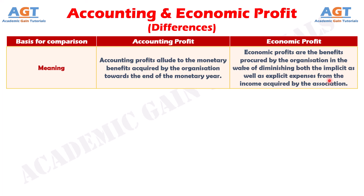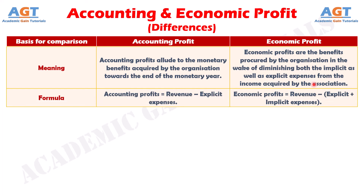Number two — the formula for calculating accounting profits is: accounting profit equals revenue minus explicit expenses. On the other hand, the formula for calculating economic profits is: economic profit equals revenue minus the sum of explicit and implicit expenses.